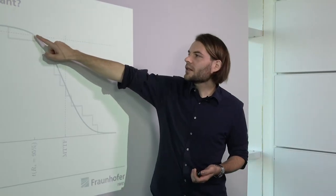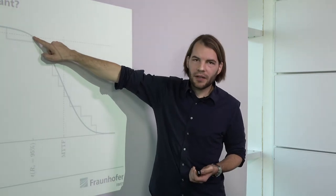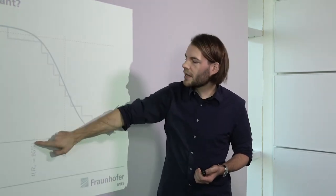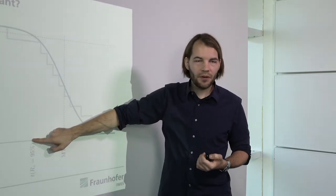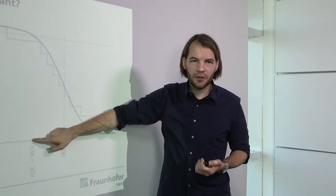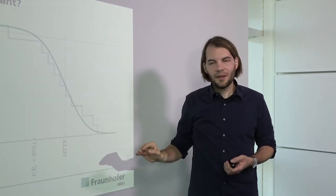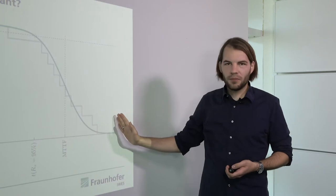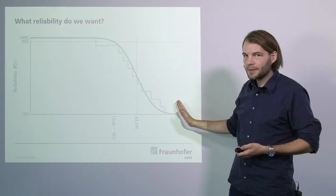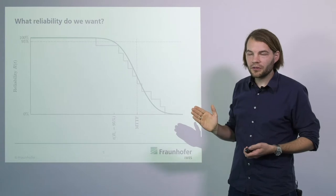If we want to do proactive maintenance, we can look, for example, at the 95% reliability value. This gives us the time at which we can do maintenance and have to accept that 5% of failures have already occurred. But this means that we waste a lot of possible lifetime of the individual turbines because we do our maintenance too early for the strong turbines.